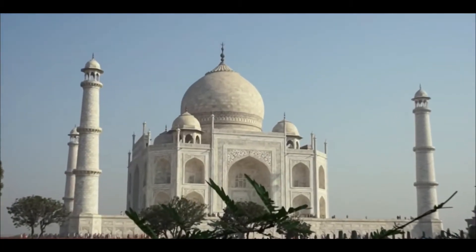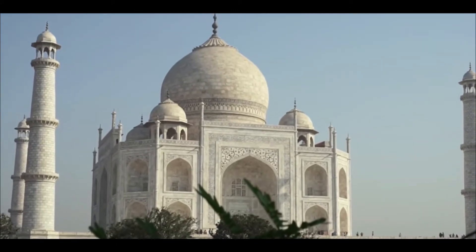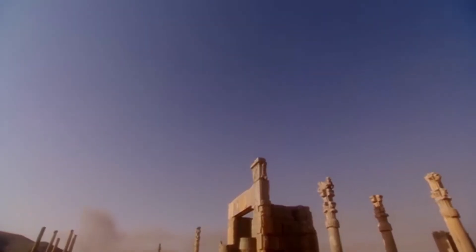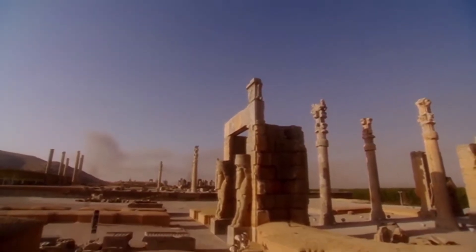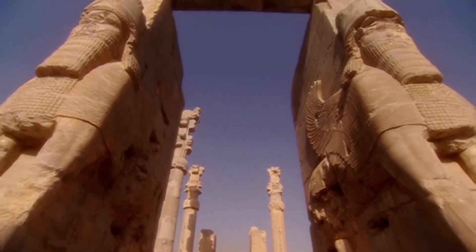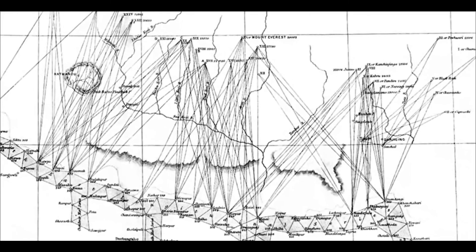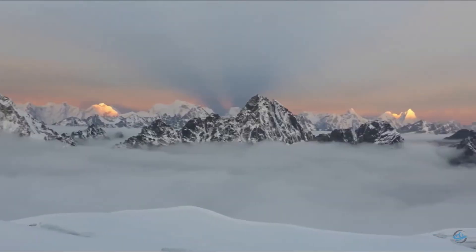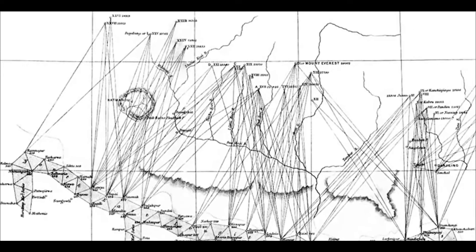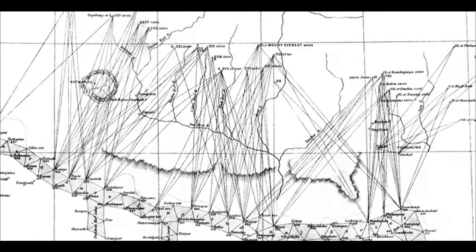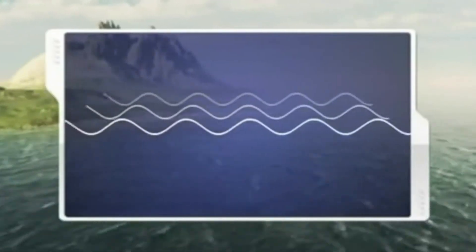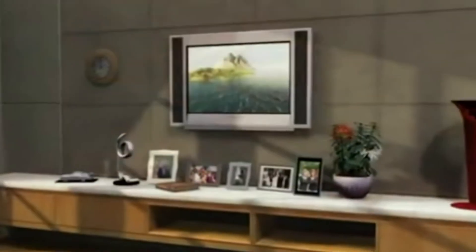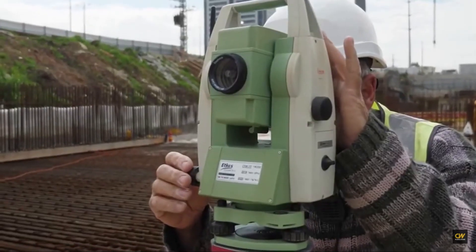Trigonometric principles also developed elsewhere in the ancient world, in India and China. During the middle and dark ages, the Islamic world throughout Spain and Persia continued its study, making major contributions to astronomy and mathematics with the production of tangent and cotangent tables, which were used as early calculators. Trig was used to map and survey much of the known world, and was used to identify Mount Everest in 1913 as the tallest mountain in the world as part of Britain's great trigonometric survey.